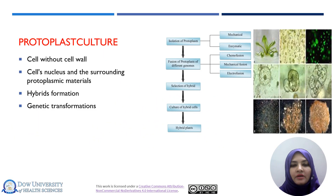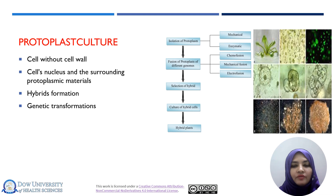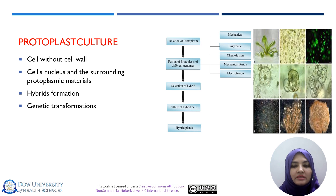Protoplast culture: what are protoplasts? Protoplasts are cells without a cell wall — the cell nucleus and surrounding material are present but without any cell wall. When we remove the cell wall, we can easily isolate or fuse different species together to form a hybrid plant. There are different methods for protoplast isolation: mechanical method and enzymatic method. The enzymatic method is more feasible and gives good results. Different enzymes such as pectinase and cellulase, alone or in combination, can be used for removal of the cell wall.